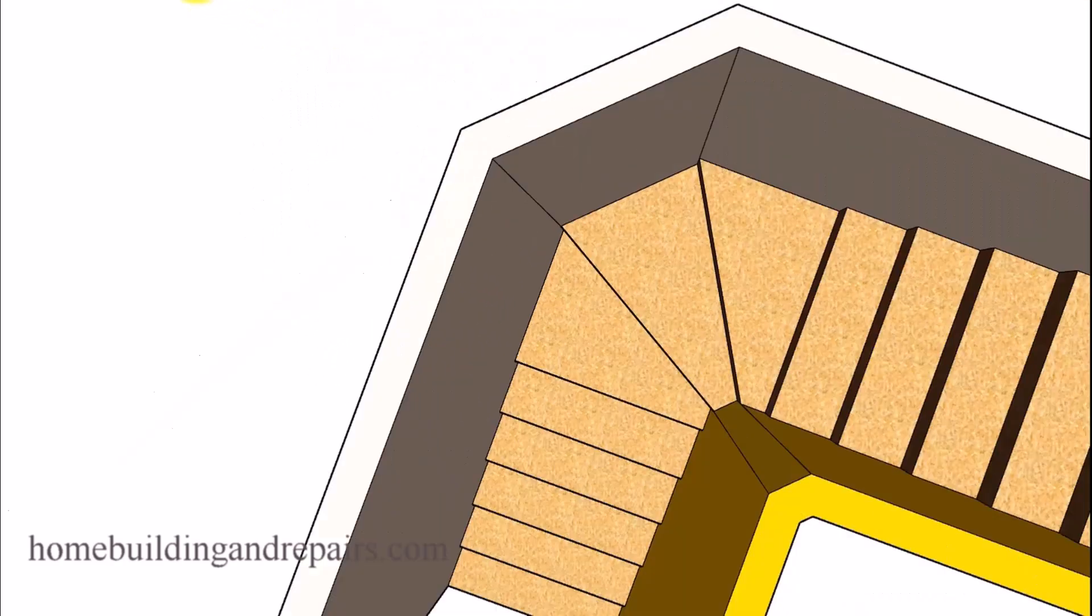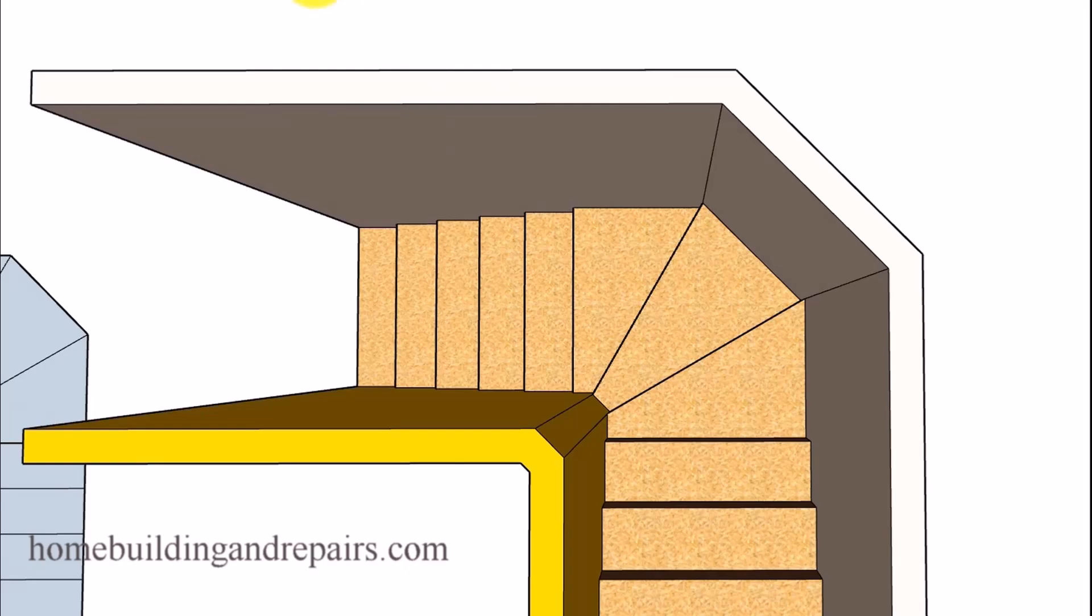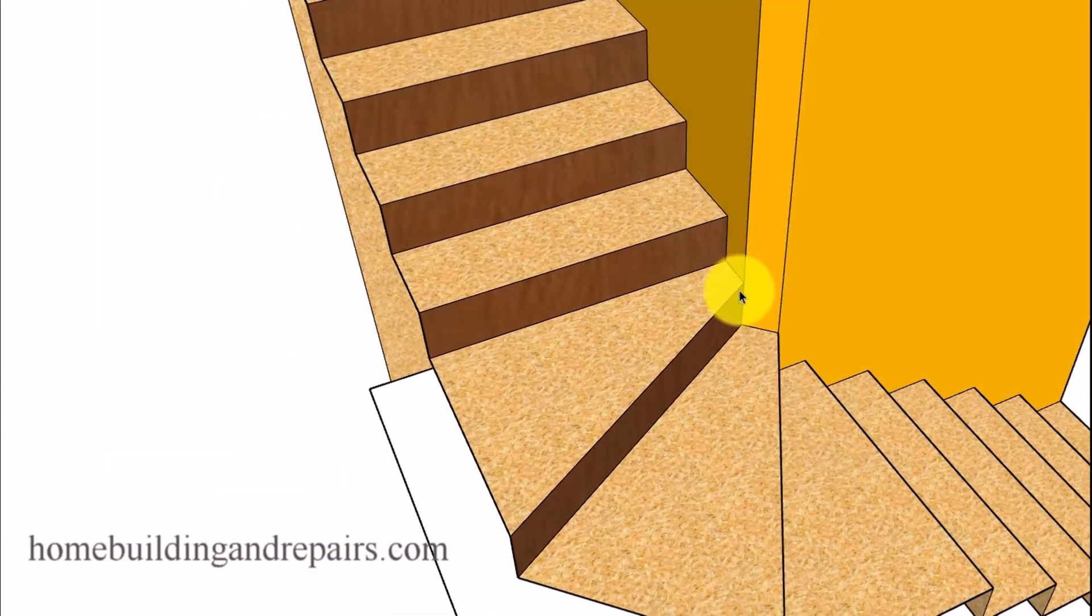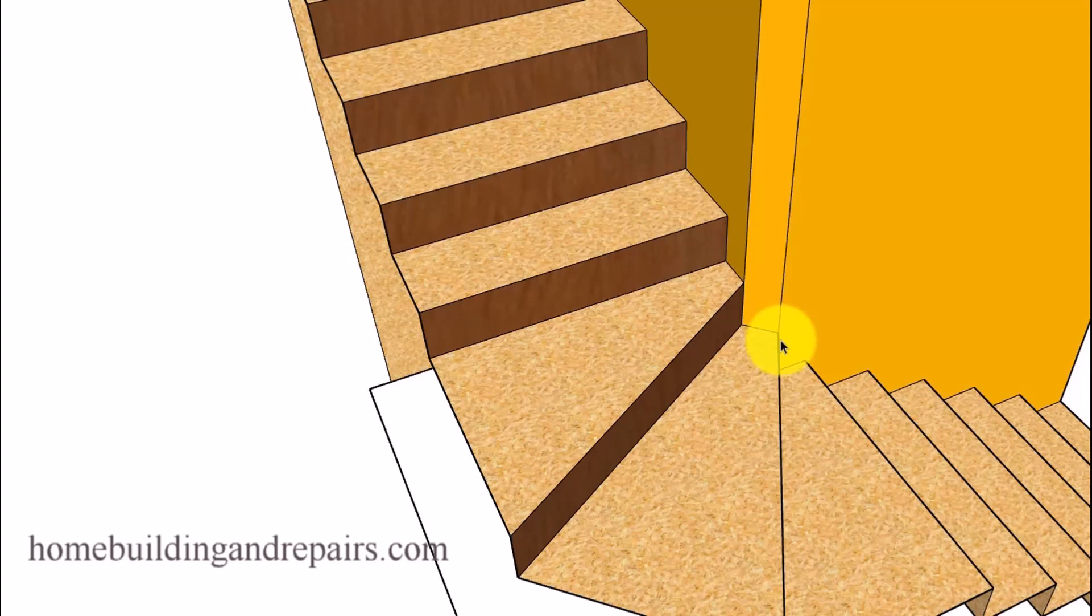Now, I do need to point out that if you have a nosing or some type of a tread overhang, you might need to re-modify the steps if you want the nosing to line up with these points here. So here we have a set of stairs where there's no nosing on it. The riser is flat and no overhang.